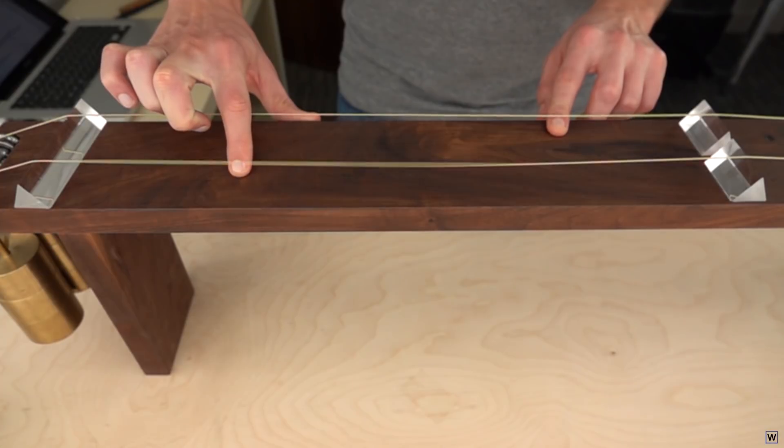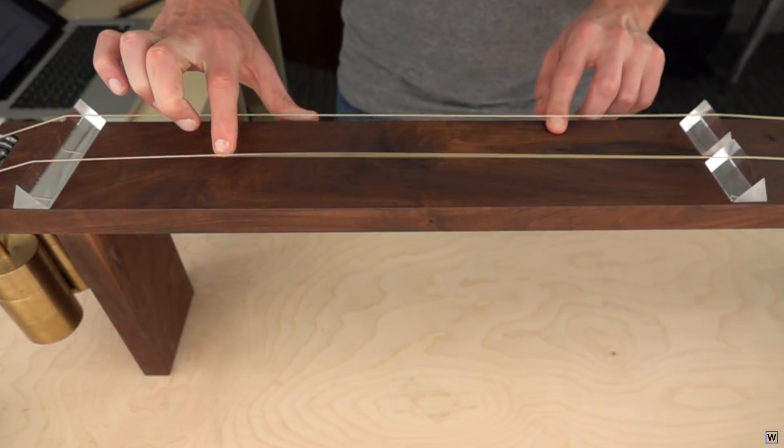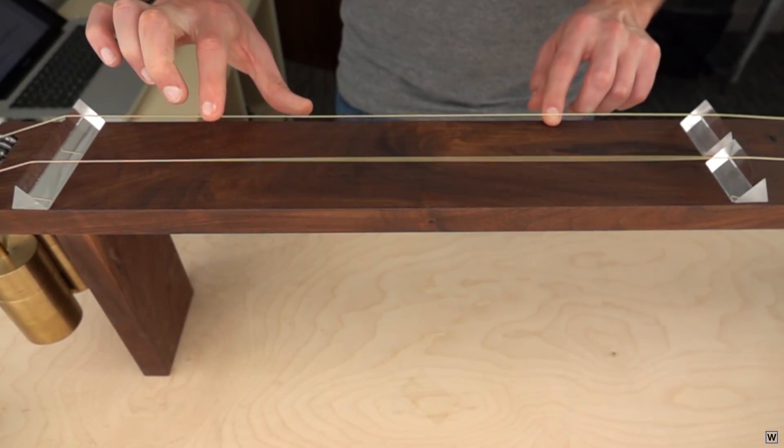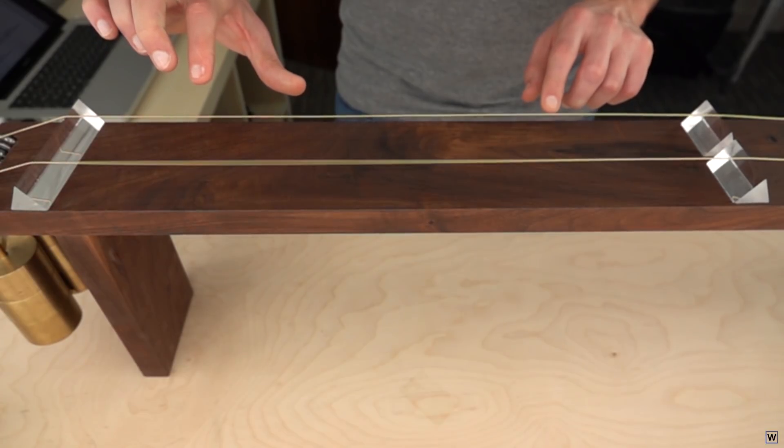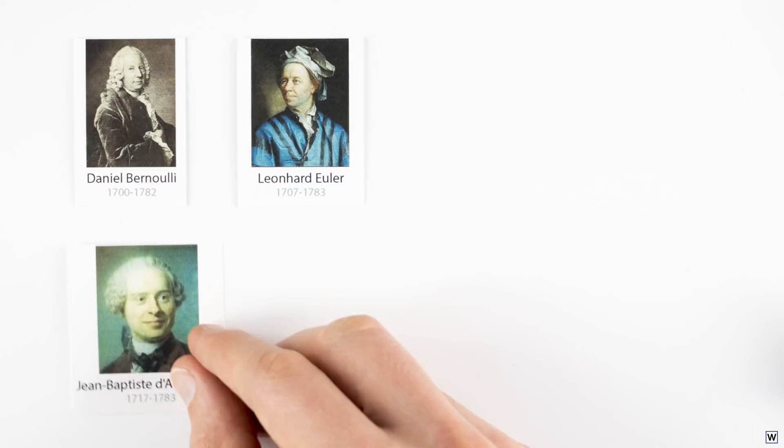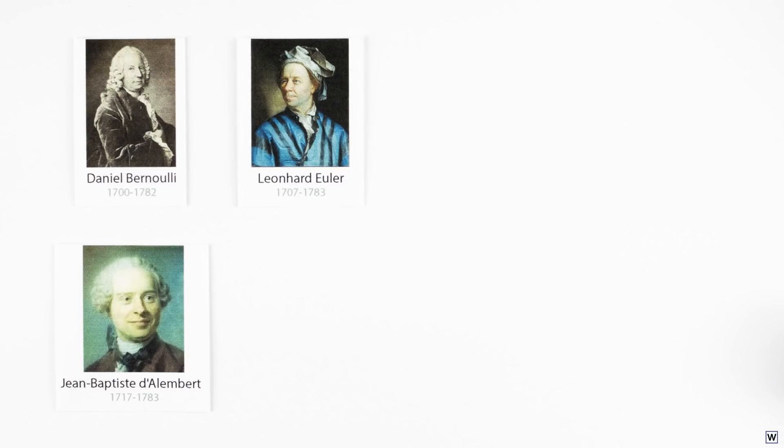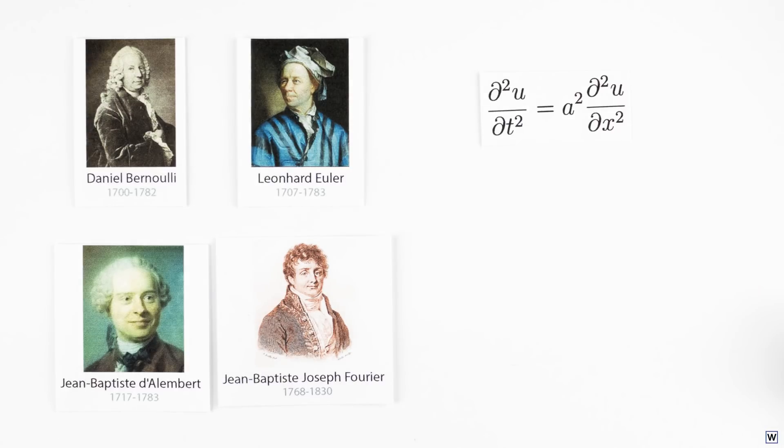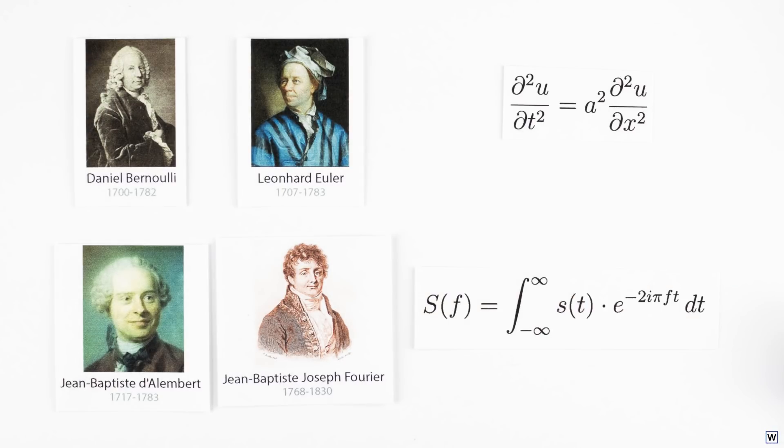Now, Galileo's guesses and Mersenne's experiments are really just the beginning of the mysteries of the vibrating string. In the following 18th century, the brightest mathematicians and scientists of the day battled over a more complete mathematical description of the vibrating string. Resolving this controversy would require the creation of some very slick and incredibly useful mathematics. Differential equations and Fourier analysis. We'll save these stories for another day, and for now we have two final mysteries to solve.